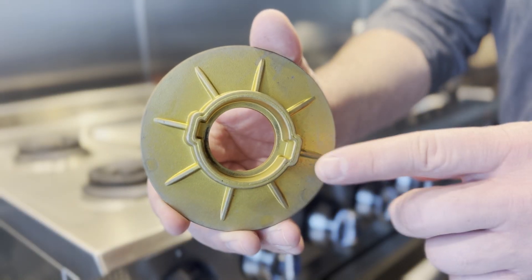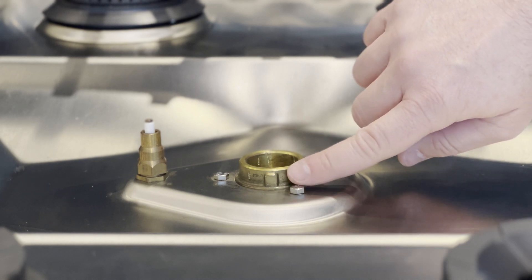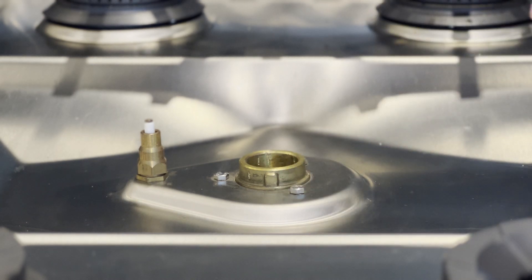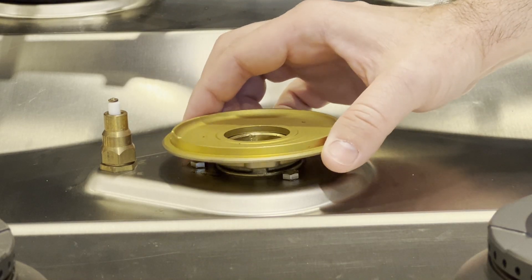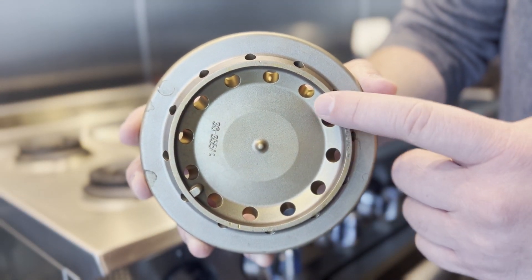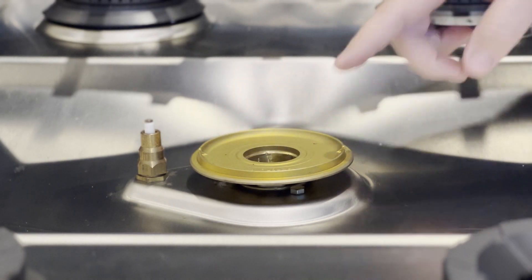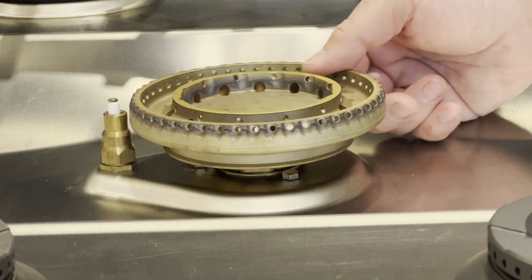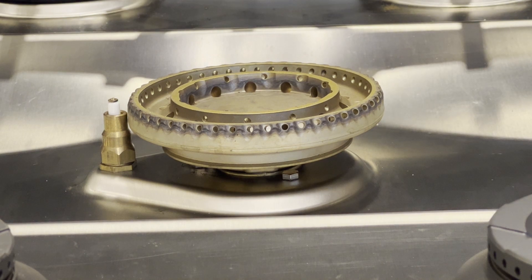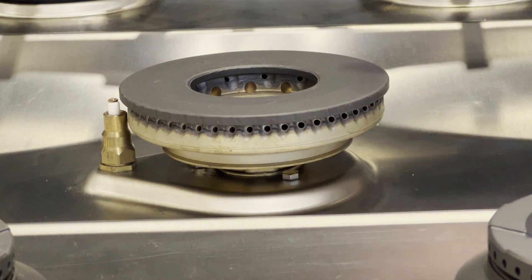For the power burner, take the bottom of the burner assembly and place it on the burner, matching the corresponding notches so it locks into place. Next, place the burner head on top of the base, also matching the corresponding notches. Lastly, place the burner assembly ring on top, which sits freely on top of the burner.